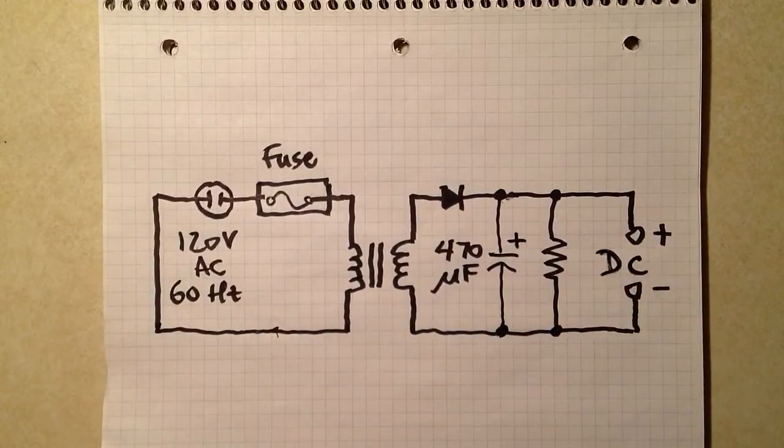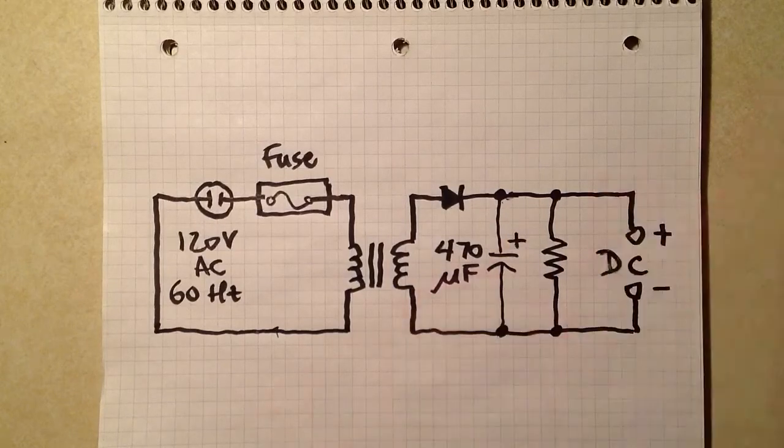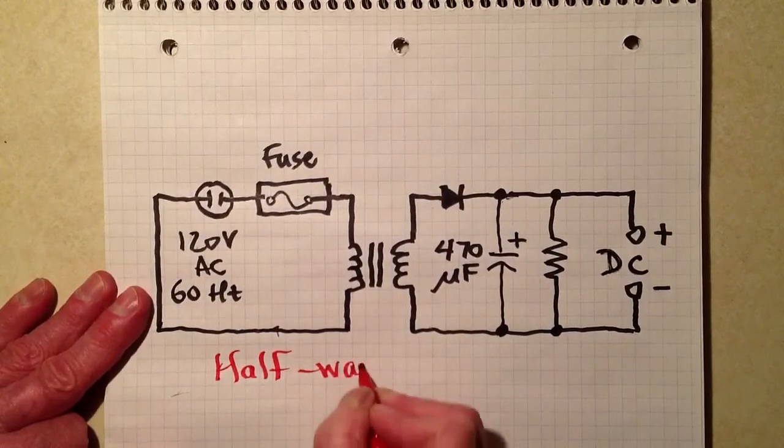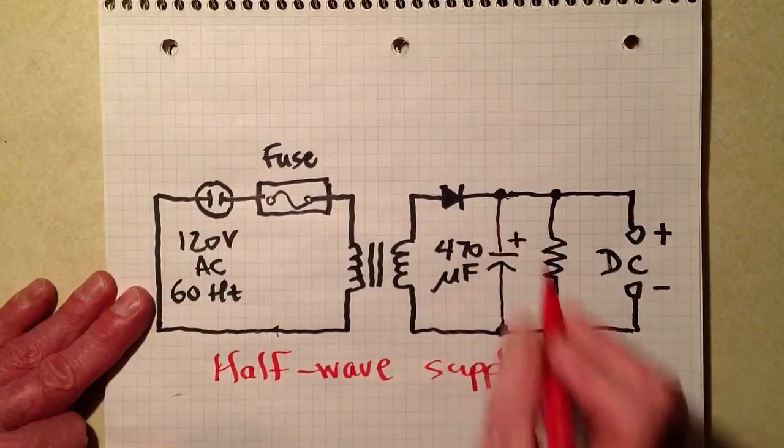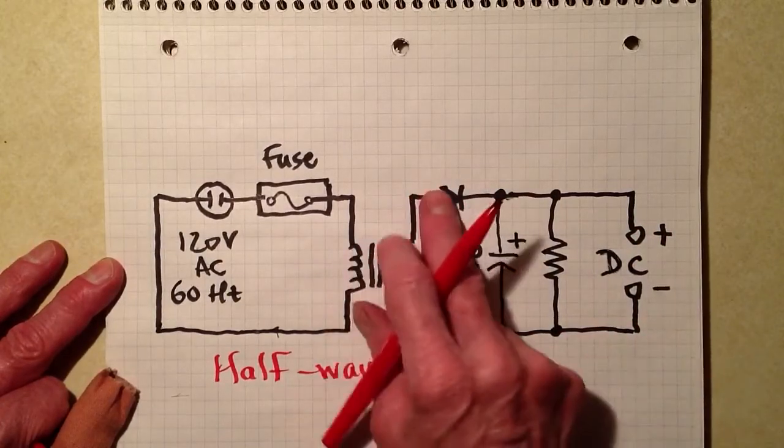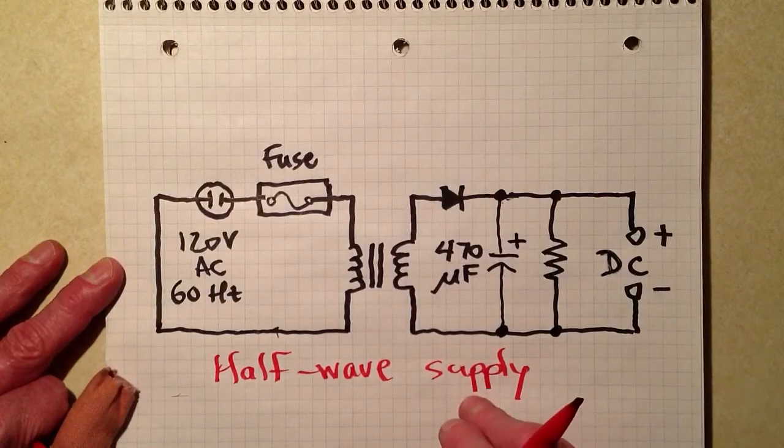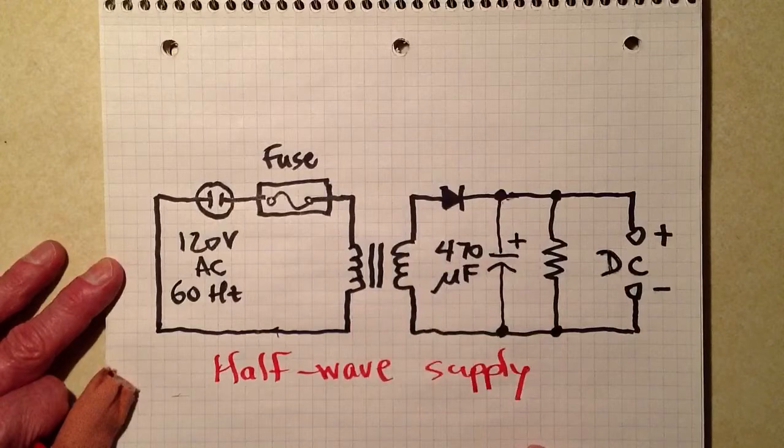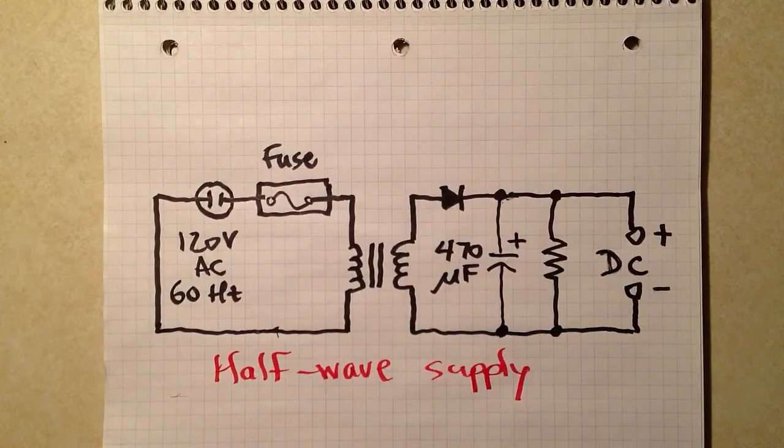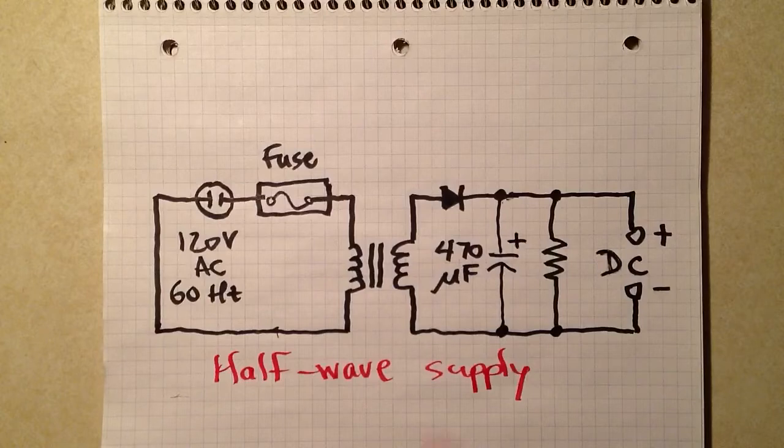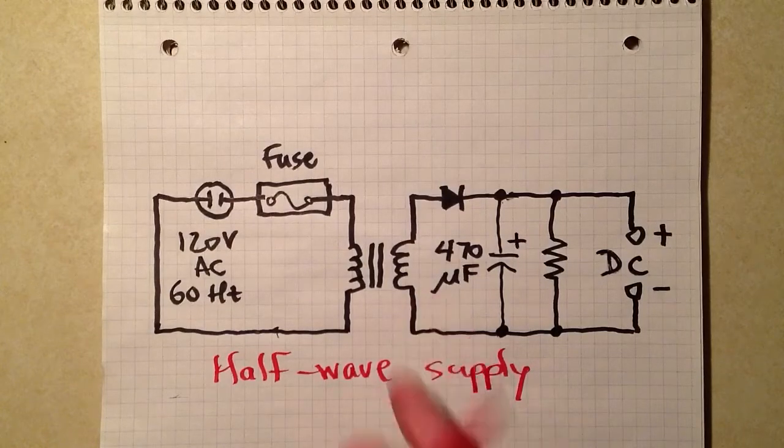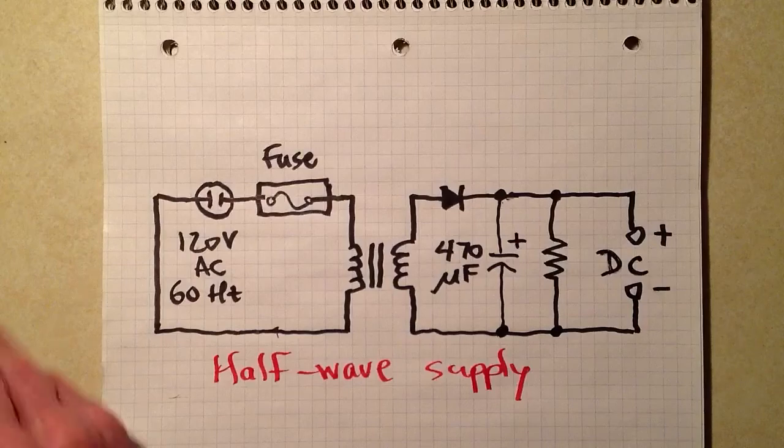So this particular kind of supply is a half-wave supply because it only works on half of the wave cycle. During one half of the cycle, electrons can flow like that. During the other half of the cycle, nothing can flow at all, so you're actually only taking advantage of half of the AC cycle. A full-wave supply is more complicated, but it takes advantage of both halves of the cycle and thereby produces twice the ripple frequency, which is easier to filter. It also results in better voltage regulation and things like that. But that is how a half-wave power supply works, how the current flows through it.